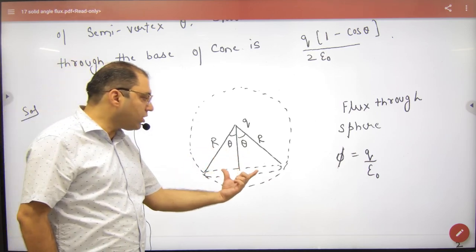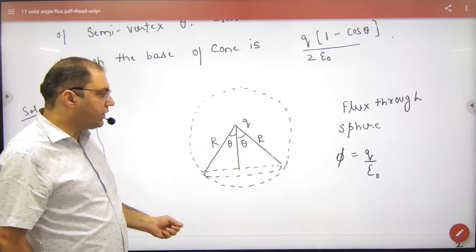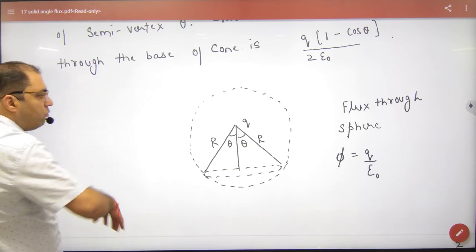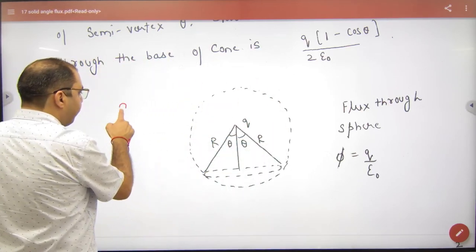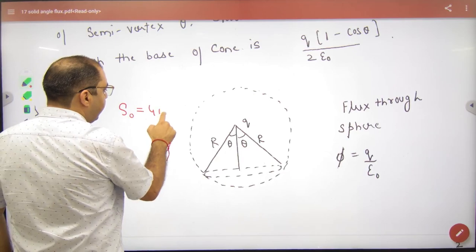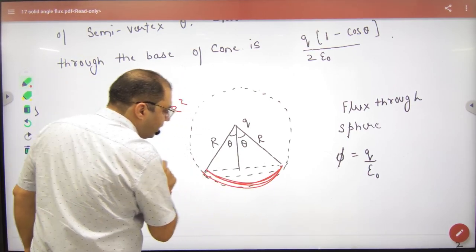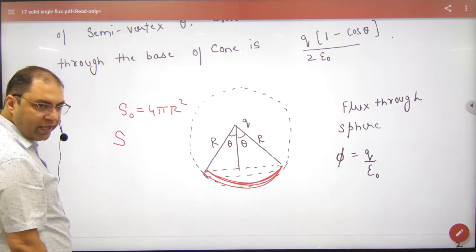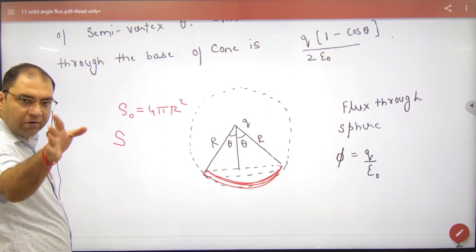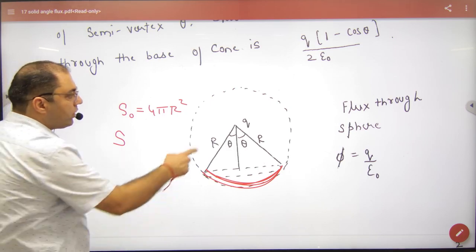But we have to find the flux through only this portion. Let's do one thing. Let us suppose this whole sphere's surface area is S₀ = 4πr². And the surface area of this portion is S, using the formula I told you.